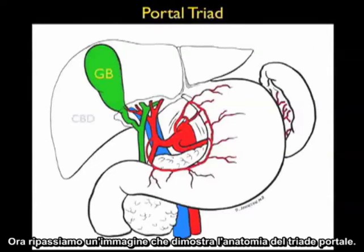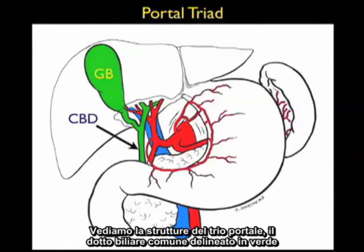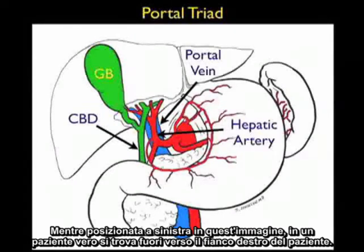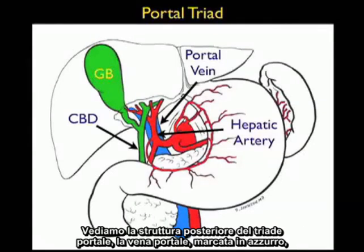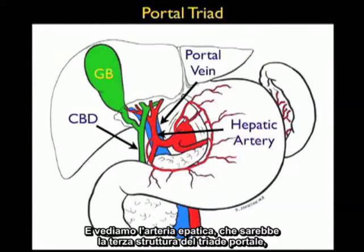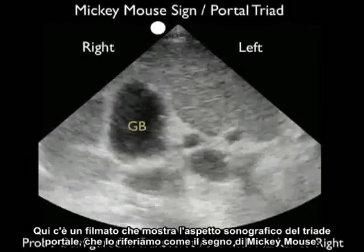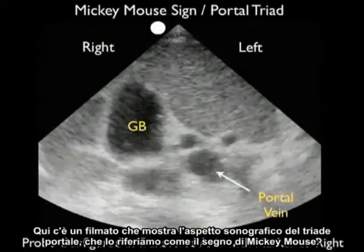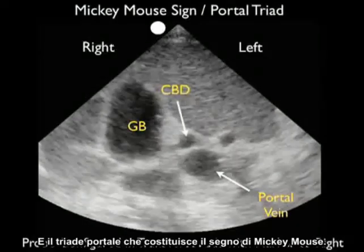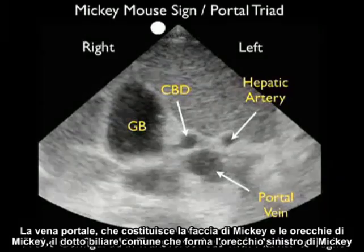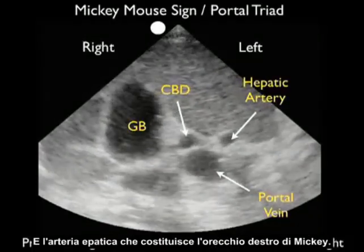Now let's review an image showing the anatomy of the portal triad. We see the first structure, the common bile duct marked in green — it connects the gallbladder down to the duodenum, and in a real patient it would be located towards the patient's right side. We see the posterior structure of the portal triad, the portal vein marked in blue, and the hepatic artery as the third structure of the portal triad, which would be located towards the patient's left side on real-time scanning. Here's a video clip showing the sonographic appearance of the portal triad, which we call the Mickey Mouse sign: the portal vein makes up Mickey's face, the common bile duct makes up the left ear, and the hepatic artery makes up Mickey's right ear.